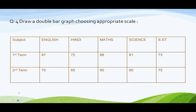The next question: The performance of a student in 1st and 2nd terms is given. In English, 1st term mein 67 hai, 2nd term mein 70 hai — bacche ne improve kiya hai. Hindi mein pehle 72 tha, baad mein 65 ho gai — improvement nahin hoi, decline ho gai. Maths mein pehle 88 tha, baad mein 95 ho gai. Hume double bar graph banana hai.